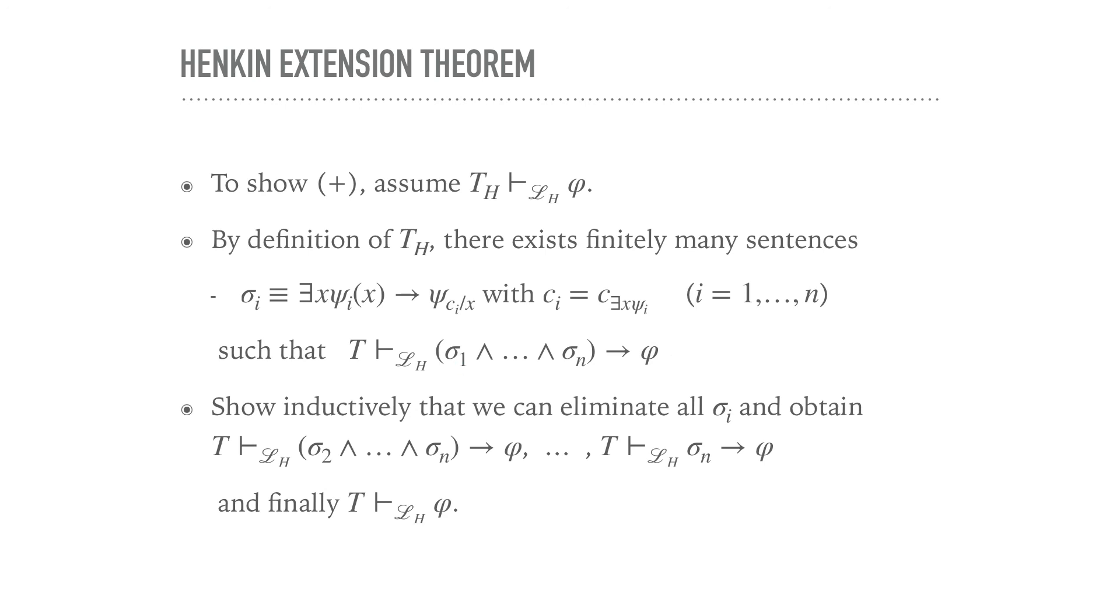Such that T proves over L_h the conjunction of the σ_i implies φ. So once you have that, now the crucial part of the proof will be to show inductively that we can successively eliminate all the σ_i and obtain then, if we can go from here to here, so we can get rid of σ_1, then we get rid of σ_2 and so on, we get rid of all the σ_i's and finally we get rid of σ_n to get the desired result, namely that T proves φ over L_h. The process is similar for each of these steps here, so essentially you just need to figure out how to get from here to here. It's not many steps but there's one little trick in there that might prove a little difficult but give it a try.